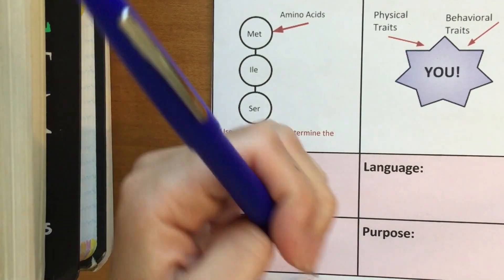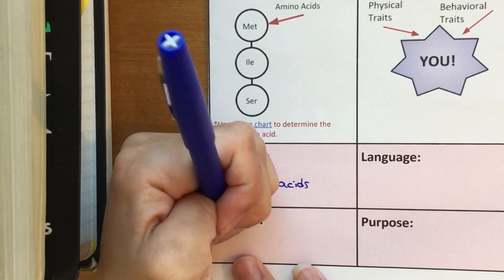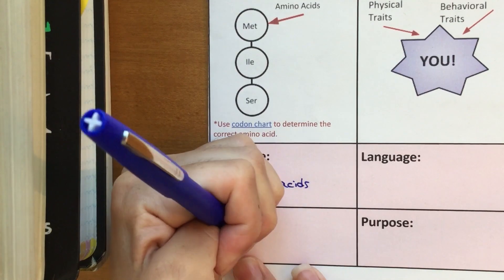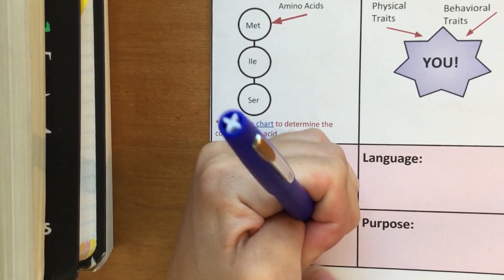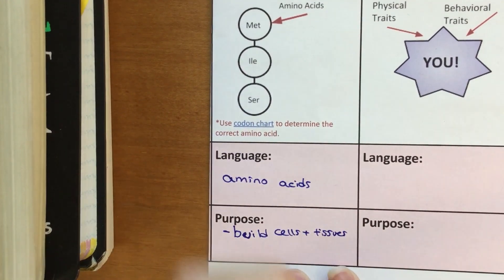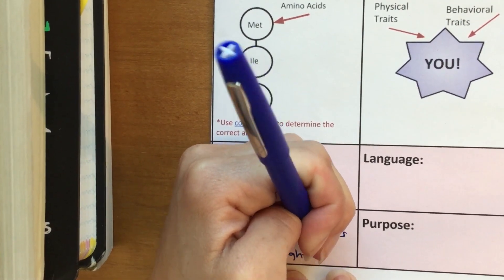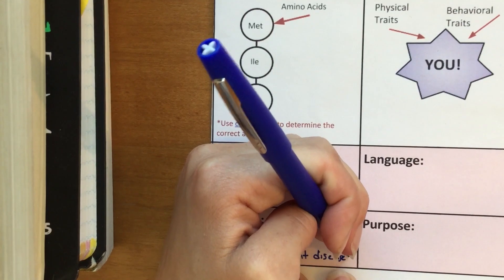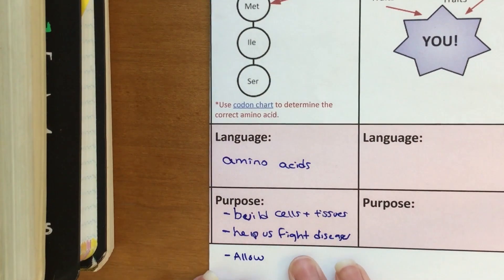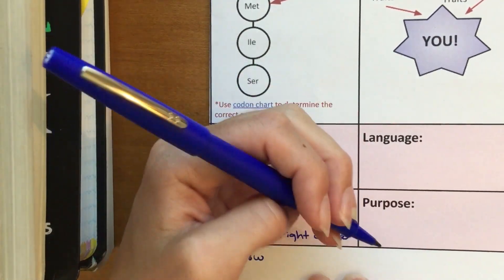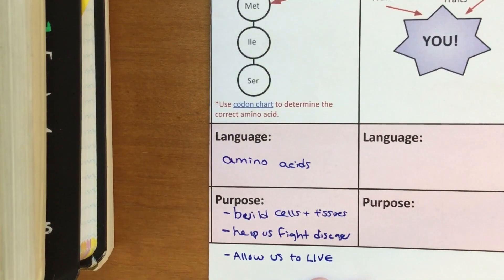We've talked about proteins before, so we already know some of the purposes or the functions of proteins, but I'll just list a few here. We know that proteins can help us build our cells and tissues, so they're needed for growth purposes in that sense. They also help us fight disease. And one more I'm going to squeeze in here is just a general statement: they allow us to live. We really can't live without the proteins that are doing so many different functions for us in our bodies every day as we speak.